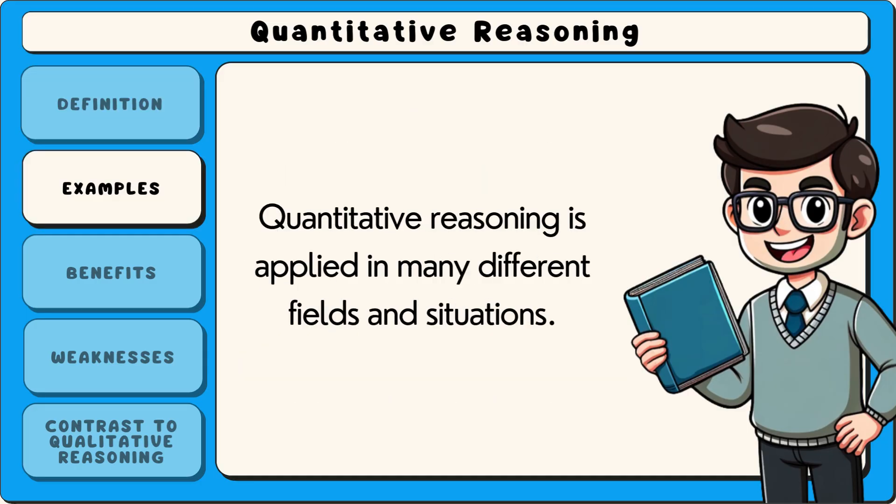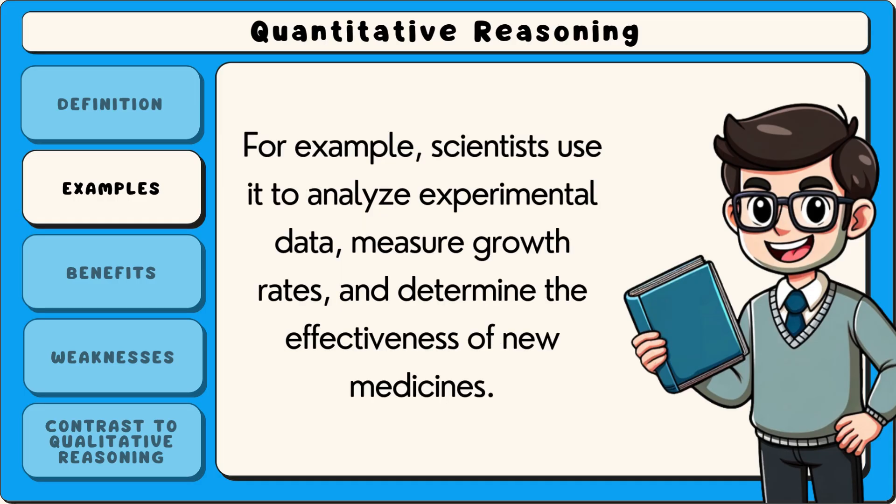Quantitative reasoning is applied in many different fields and situations. For example, scientists use it to analyse experimental data, measure growth rates and determine the effectiveness of new medicines.